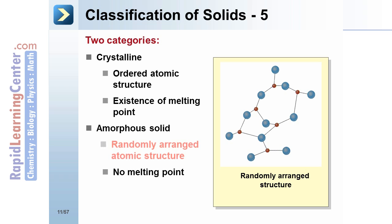Amorphous solids always have a randomly arranged atomic structure, as in the diagram to the right. This makes their properties very different from crystalline solids, which are very regular and organized.